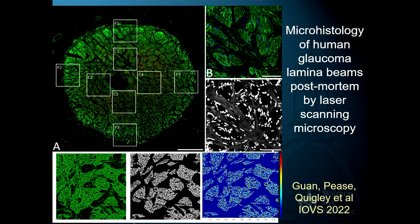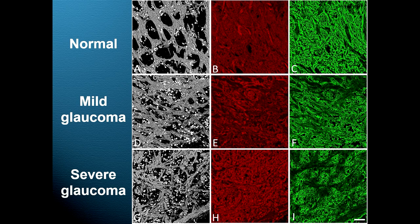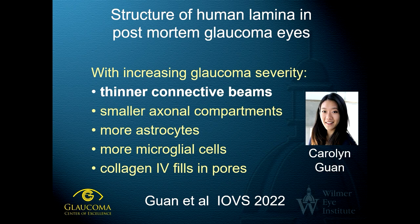We recently studied a series of human glaucoma eyes post-mortem, conducting detailed histopathology of what's gone on with time in the eye. This involved taking second harmonic generation images, digitizing them, and studying the images both qualitatively and quantitatively. There are dramatic changes in each aspect of the optic nerve head. Summarizing this work done by student Carolyn Guan: eyes with worse glaucoma damage had thinner connective tissue beams, more astrocytes, and astrocyte product — collagen type 4 basement membrane — filling in the pores where axons had been before they atrophied.